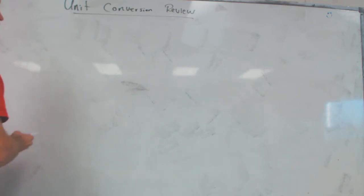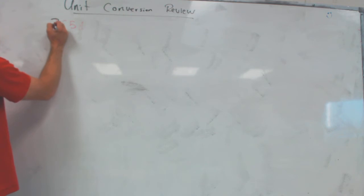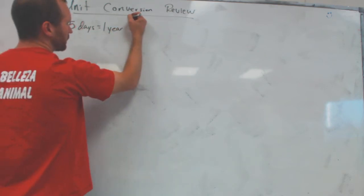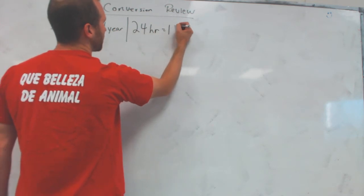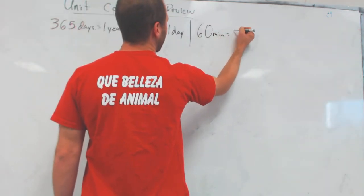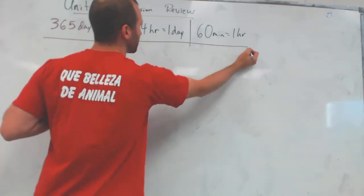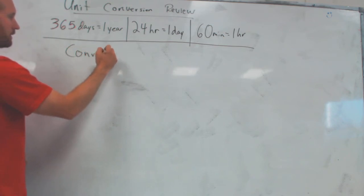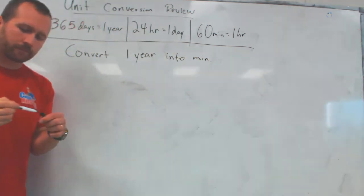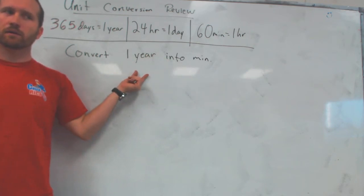This is one of my favorite examples today. How many days are in a year? 365. Let's say that's true — 365 days in one year. How many hours are in a day? 24 hours equals one day. How many minutes are in an hour? 60 minutes. I'll give you these on the homework — there'll be a list at the top. So let's convert one year into minutes. How many minutes are in one year?